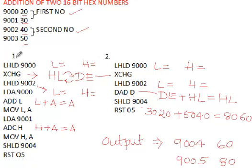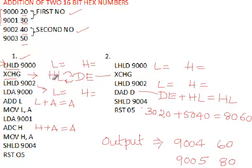For the normal program, we first use LHLD 9000. From address 9000 and 9001, values 20 and 30 are loaded into the HL pair register, where L takes 20 and H takes 30. Then we use the XCHG instruction to exchange the HL pair value with the DE pair. DE pair had some value, say 00, which comes to HL, and the current HL value 20-30 moves to the DE pair.